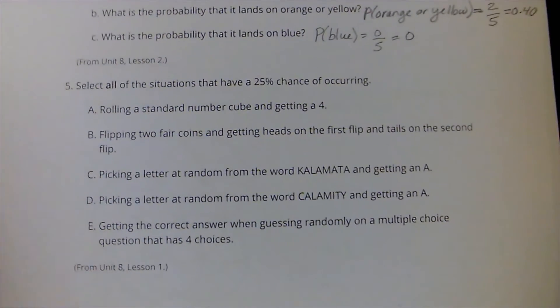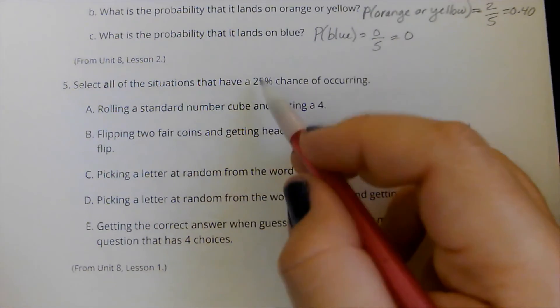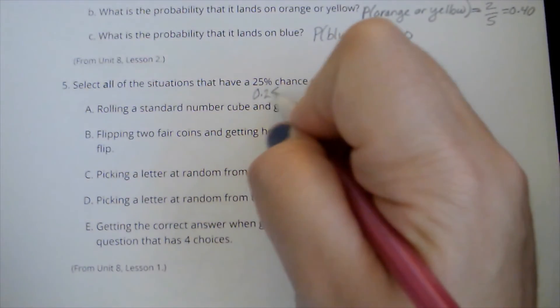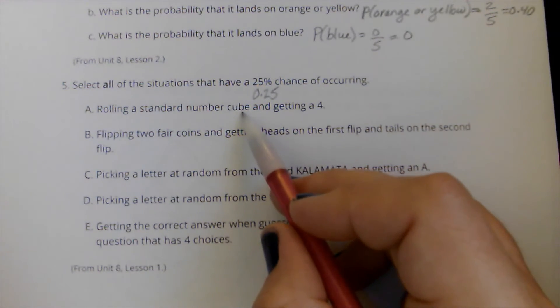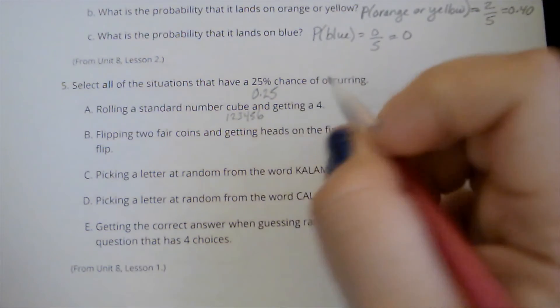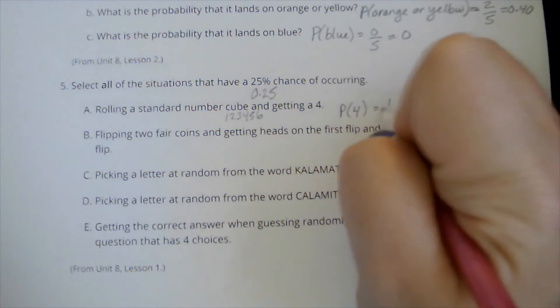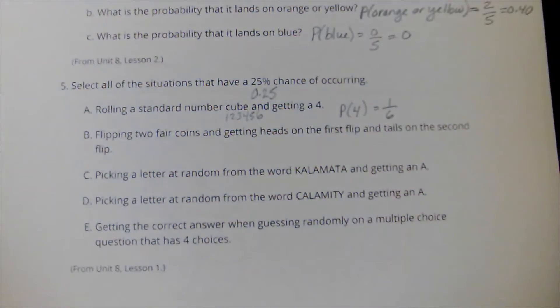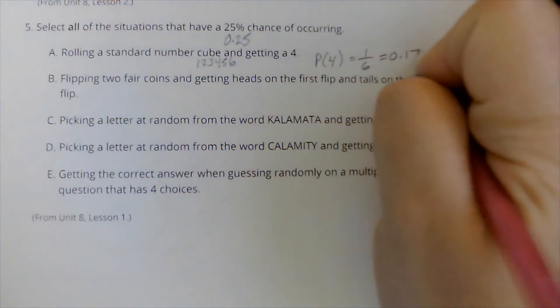Alright, and let's go on to this last one. Select all the situations that have a 25% chance of occurring. So I need to find the probability of each one. And if it is 25% chance, which is going to be a 0.25 for a probability, then I'm going to select it. So rolling a standard number cube. So that's rolling a die. The options on a standard number cube are one, two, three, four, five, or six. So the probability of getting a four is one out of a six. So probability of rolling a four equals one out of six. That is not 0.25. It's less than 0.25. If I do one divided by six, it is 0.17. So I don't want to choose this one.